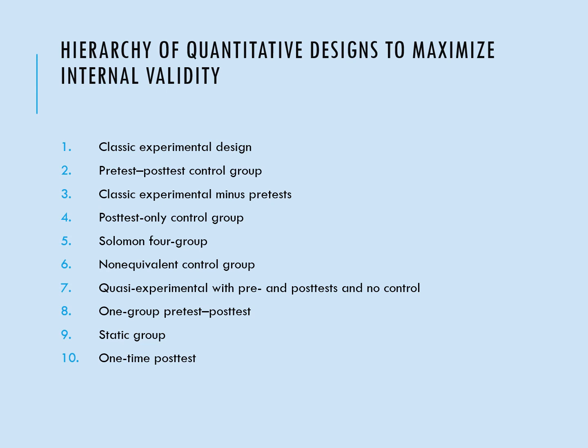To maximize internal validity, there is a hierarchy of quantitative designs. Basically, classic experimental design is the best one, all the way down to a one-time post-test design, with everything in between. There are better ways to design an experiment and record information to maximize internal validity — meaning the intervention or treatment is the real reason for the outcome or dependent variable changes, and there's no other factor or threat to internal validity present.